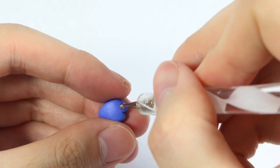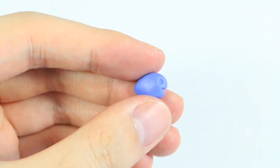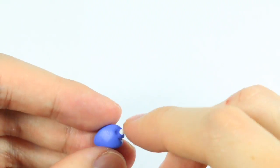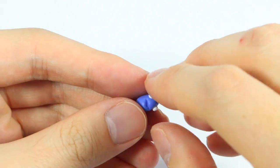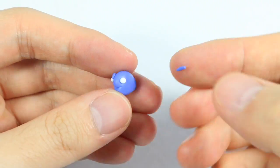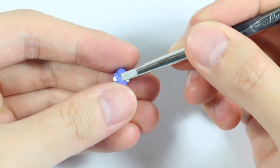Then for the eyes you want to make two large indents and you want to fill those indents with two balls of white clay. Then for the eyelids I'm taking a strip of blue clay and I'm wrapping the eyes around it. And I'm using my tool to kind of blend that into the face.